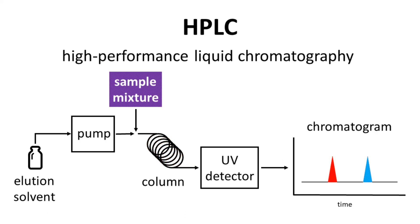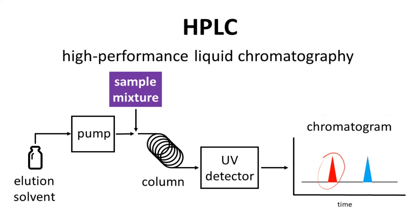A detector at the end of the column checks the liquid coming through for the presence of the desired compound or impurities. You end up getting a readout called a chromatogram — or maybe a trace — with peaks at different times corresponding to the elution of each compound.